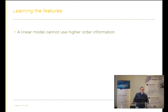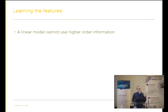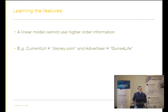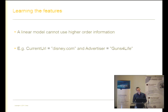Offline learning is not the main issue — prediction is. For learning features, our basic model as Yann mentioned is a linear model: perceptron, logistic regression, linear SVM. Linear methods are extremely easy to train and easy to compute in real-time prediction. The problem is a linear model can't capture higher-order information. Neural networks have been all about learning to combine lower-level information into higher-order representations to better predict. For example, if the current URL is disney.com and the advertiser is 'Guns for Life', the average click probability on that combination can't be immediately deduced from each alone.